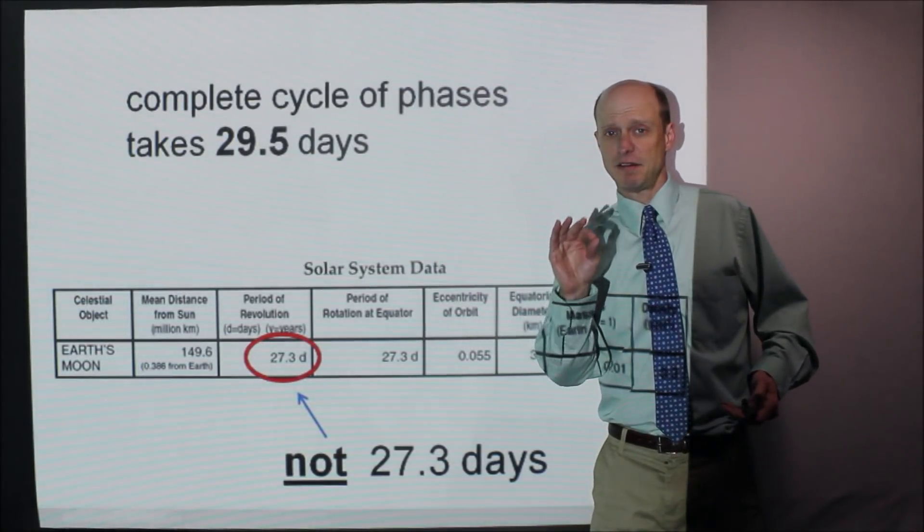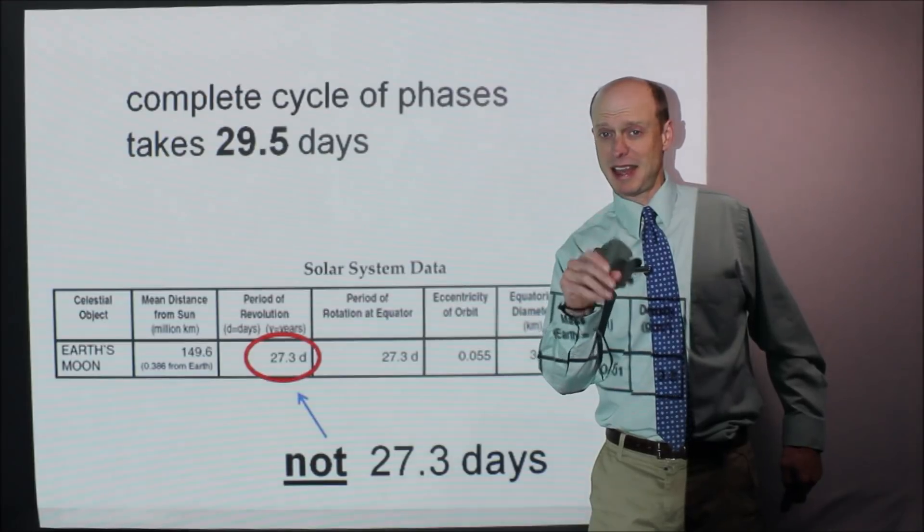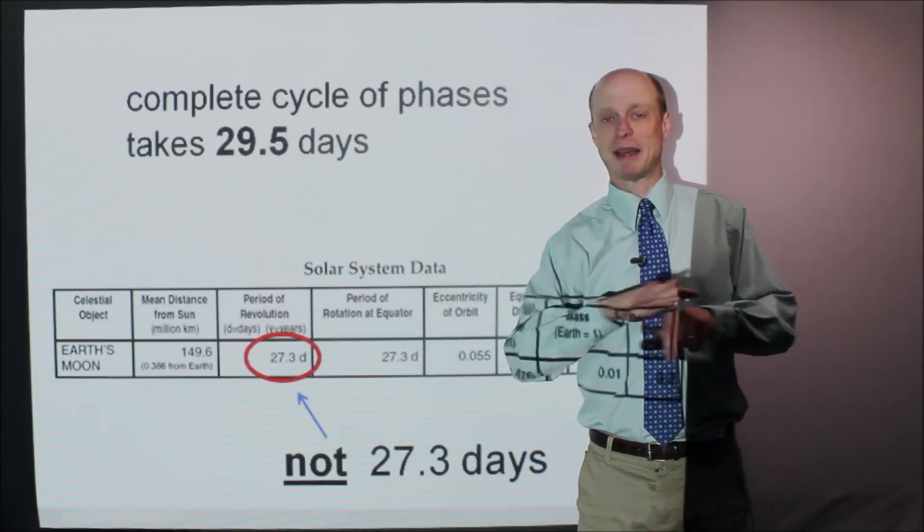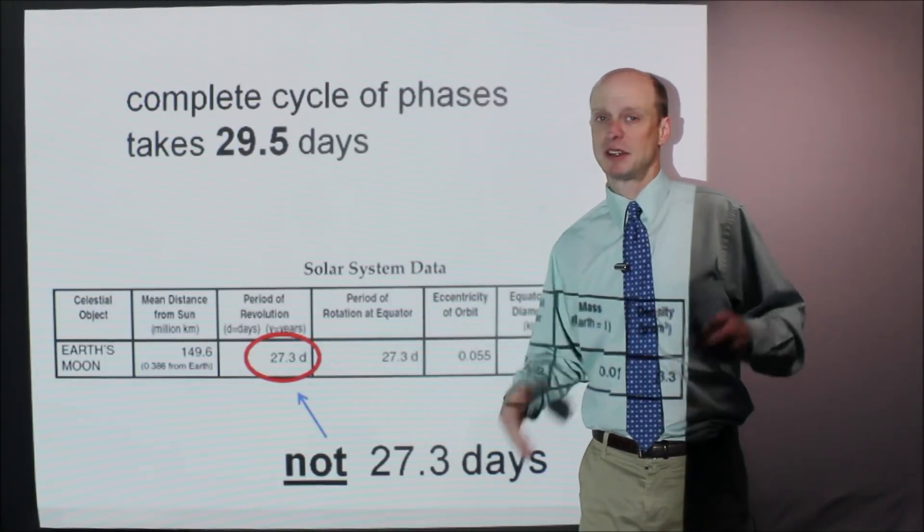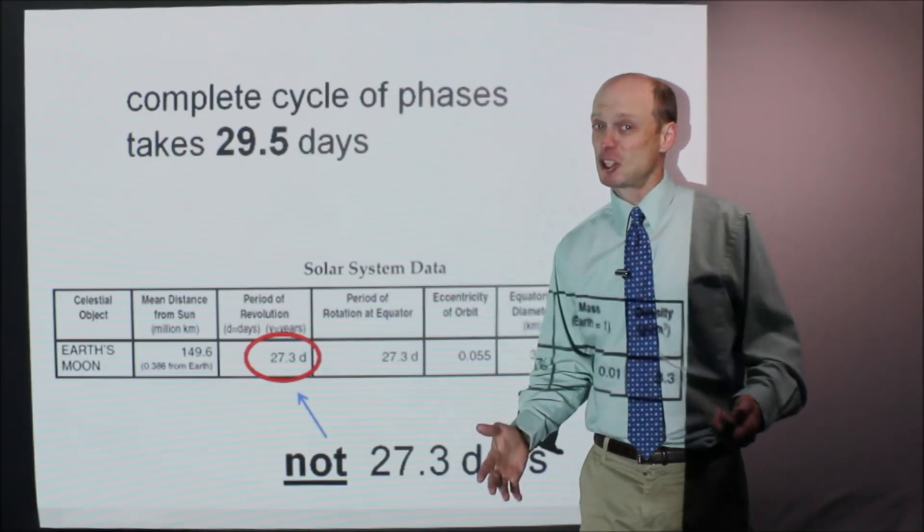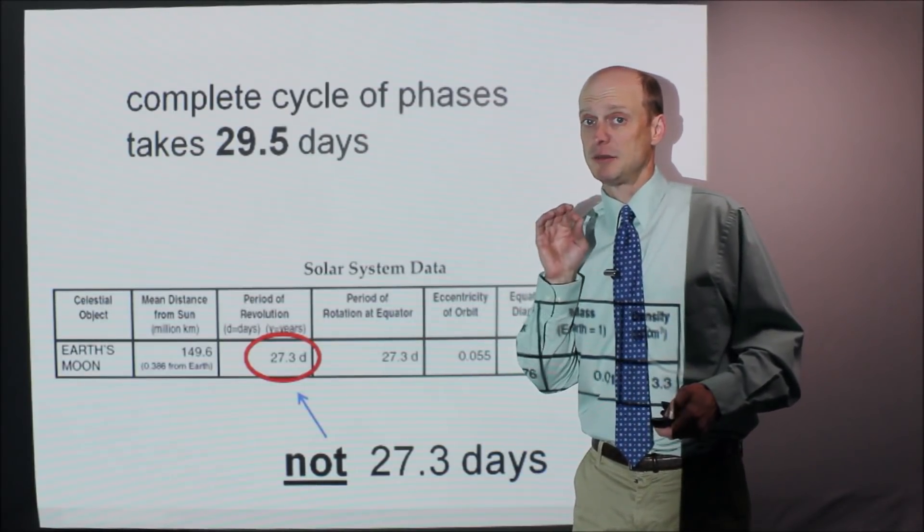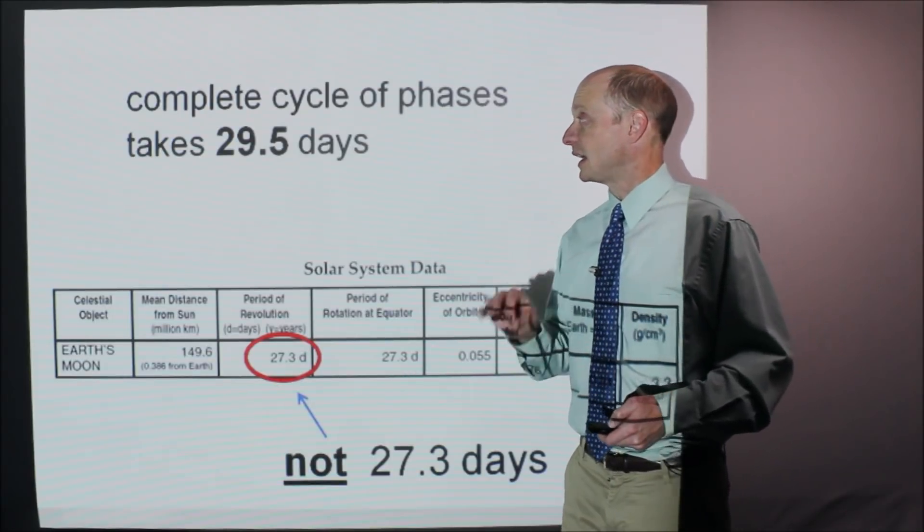That is very confusing. I get it. If you're confused by that, it's understandable. It gets complicated. It's because Earth is also moving. I'm not going to get into that. Just make sure that you know this. Just kind of know that it's 29.5 days to see a complete cycle of phases.